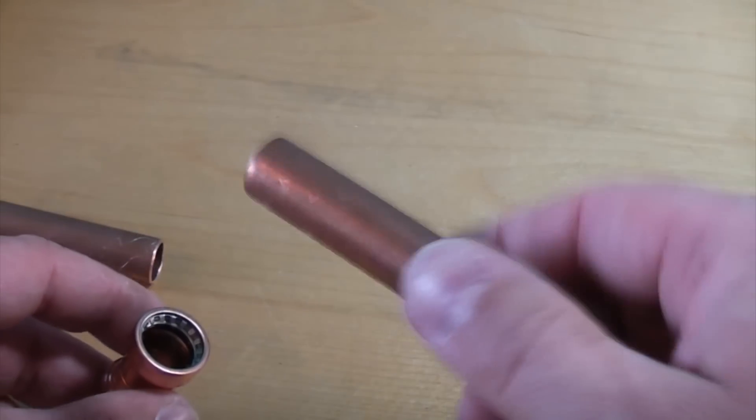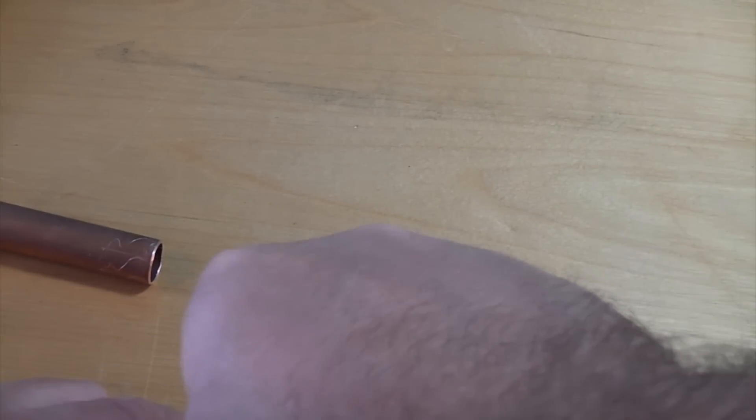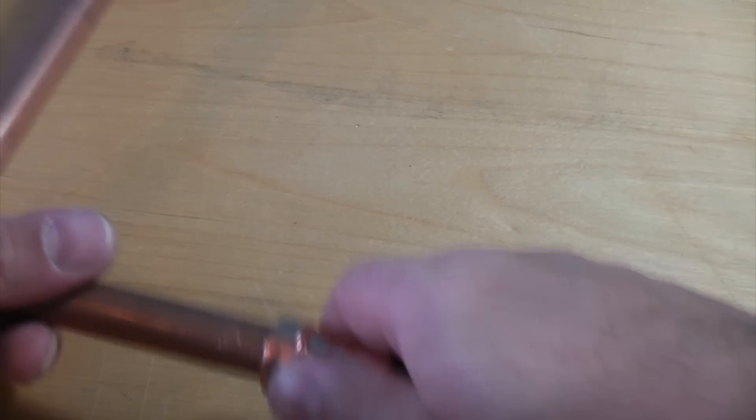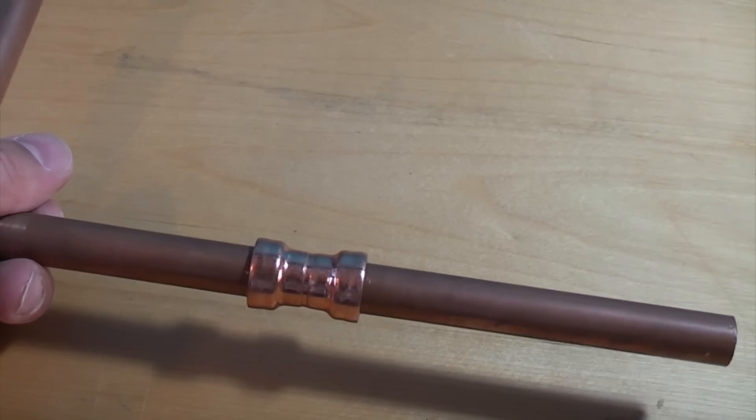All you do is cut your pipe and make sure it's clean and deburred, and just push it straight into the fitting. Then do the same on the other side. When you've pushed it in, that's it, the joint's been made.